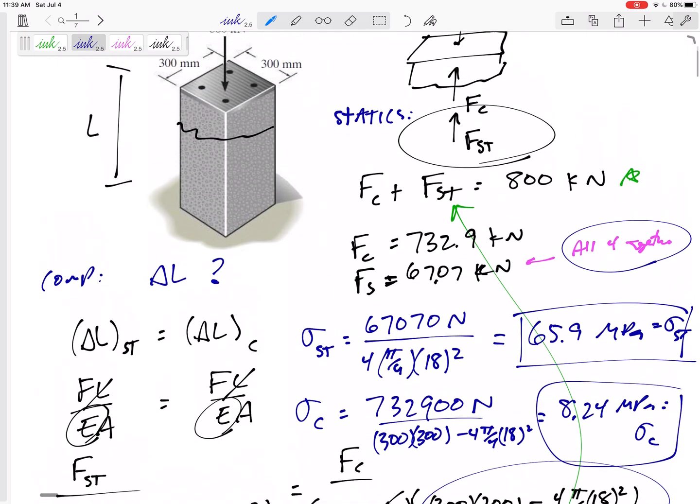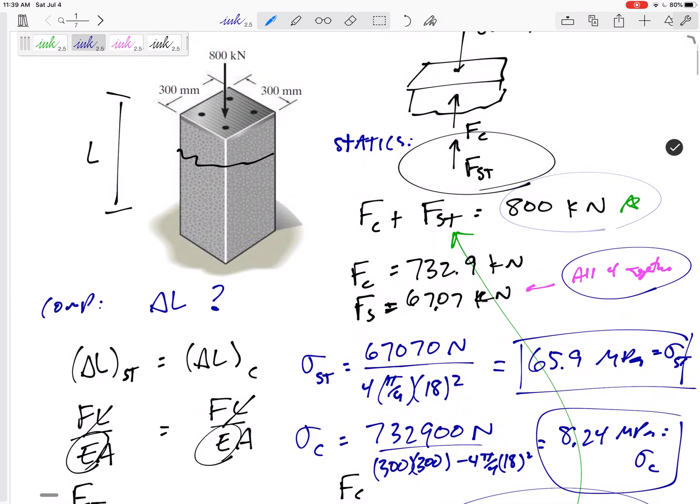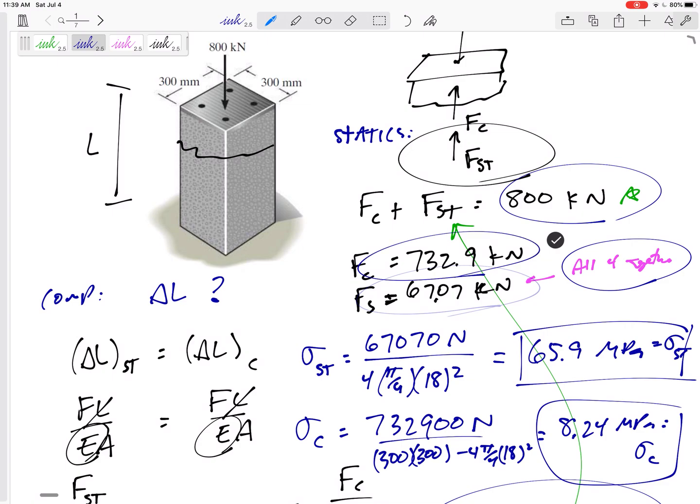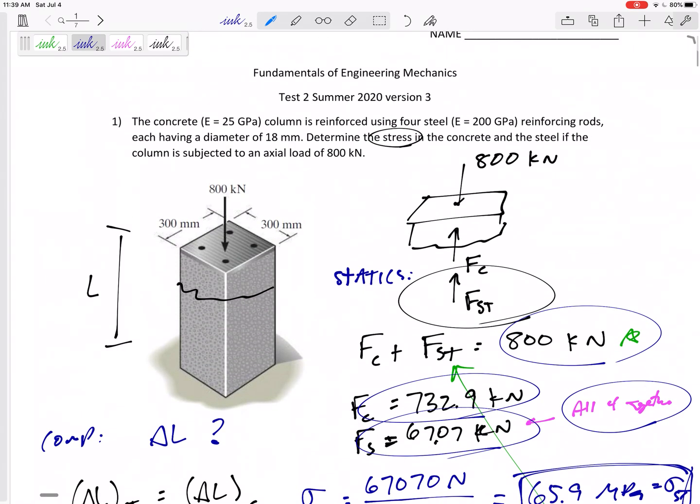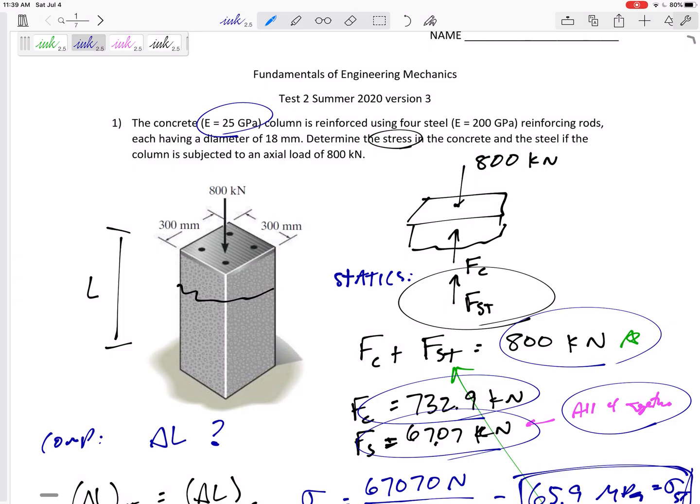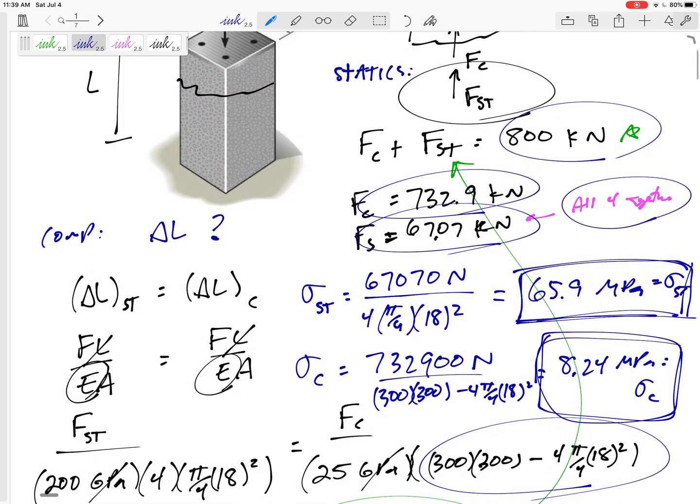So that's pretty interesting, how this 800 kilonewtons—700 goes to the concrete, only 67 goes to the steel—but the steel has much, much smaller areas than the concrete. The stress in the steel is larger than the stress in the concrete because the E, right? Because the Es and the areas, it takes a lot more stress to compress the steel than it does the stress it is to compress the concrete.